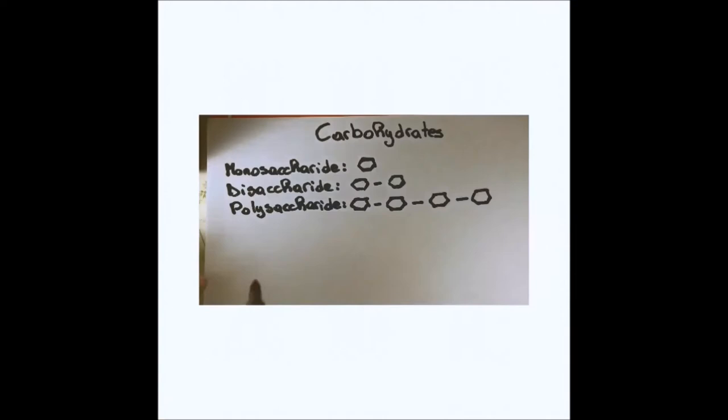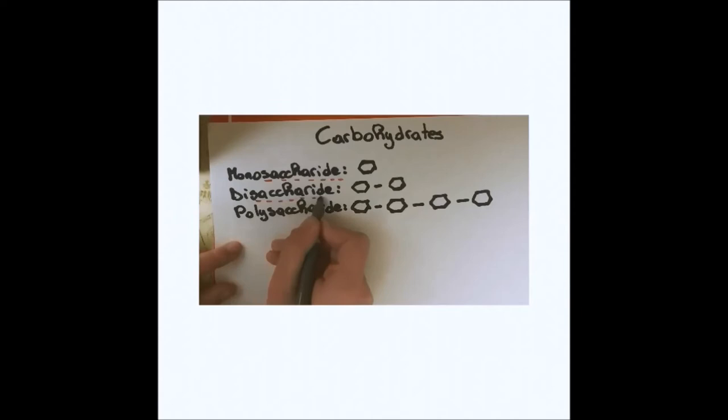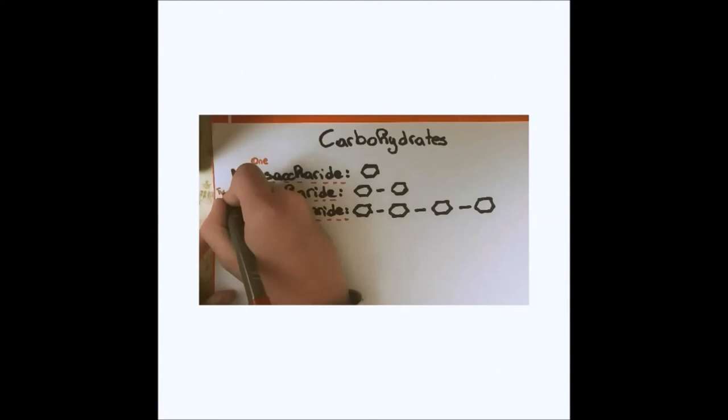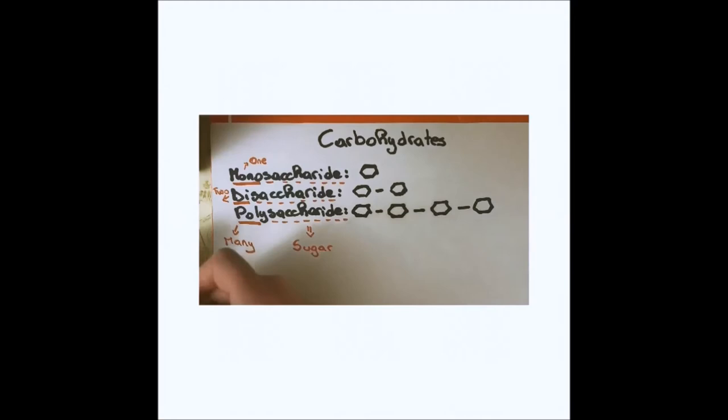The term saccharide is just another word for sugar. The prefixes mono, di and poly refer to the number of sugars in the molecule. Mono means 1, di 2 and poly many.